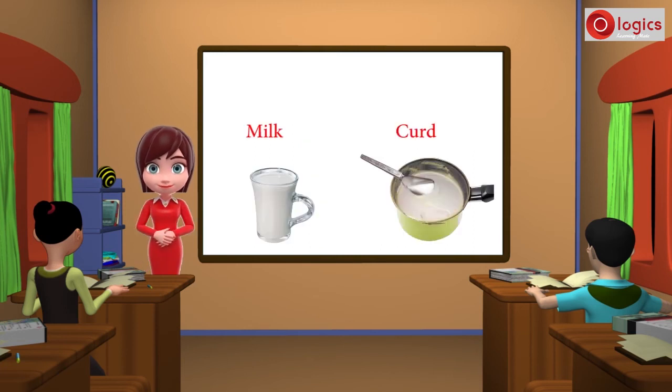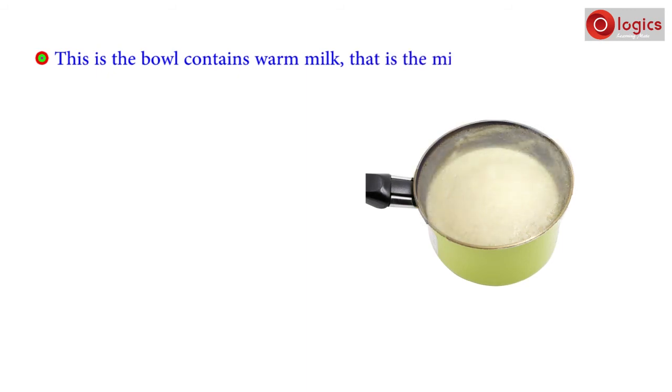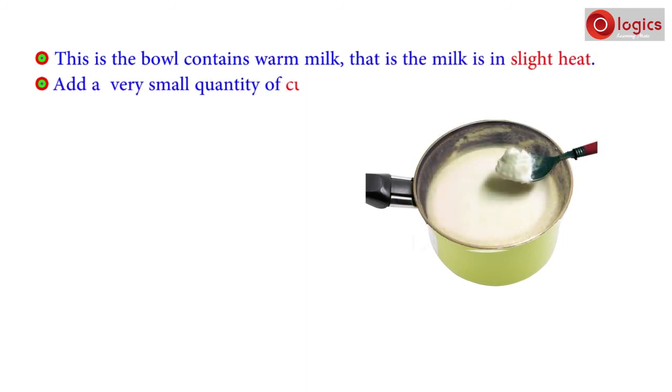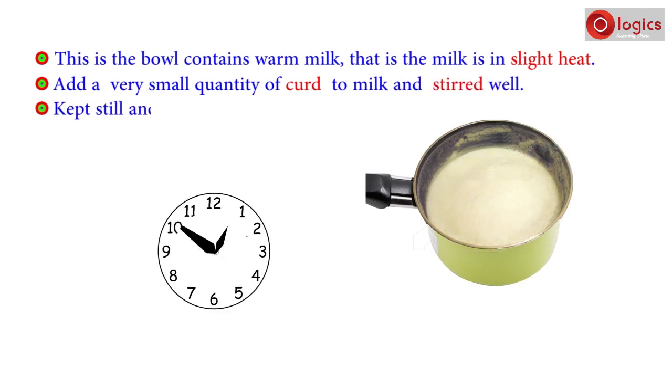Milk and curd are two substances. Do you know how milk can be converted into curd? Let us see. This is the bowl containing warm milk, that is the milk is in slight heat. Add a very small quantity of curd to milk and stir well. Keep it still and undisturbed for a few hours to get curd.